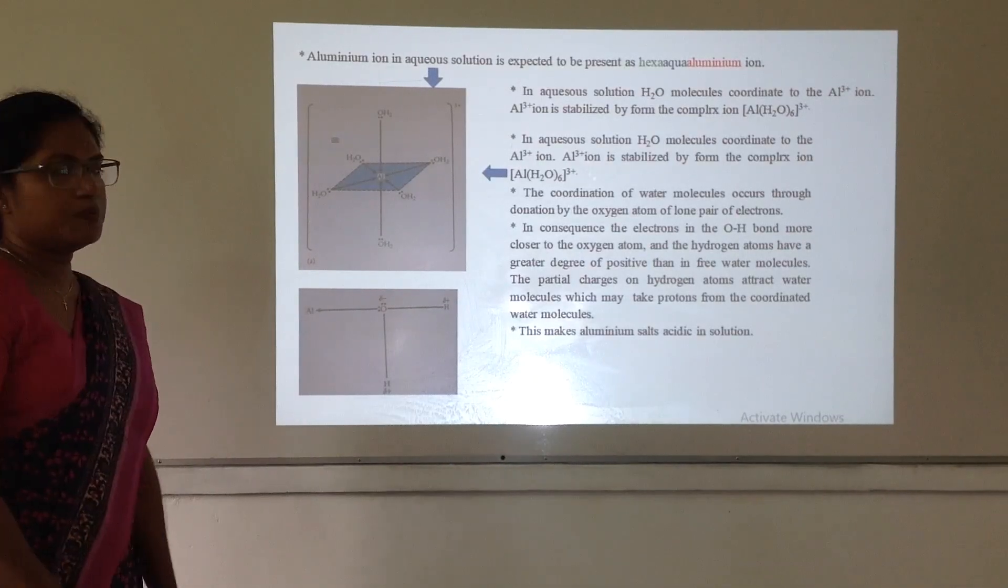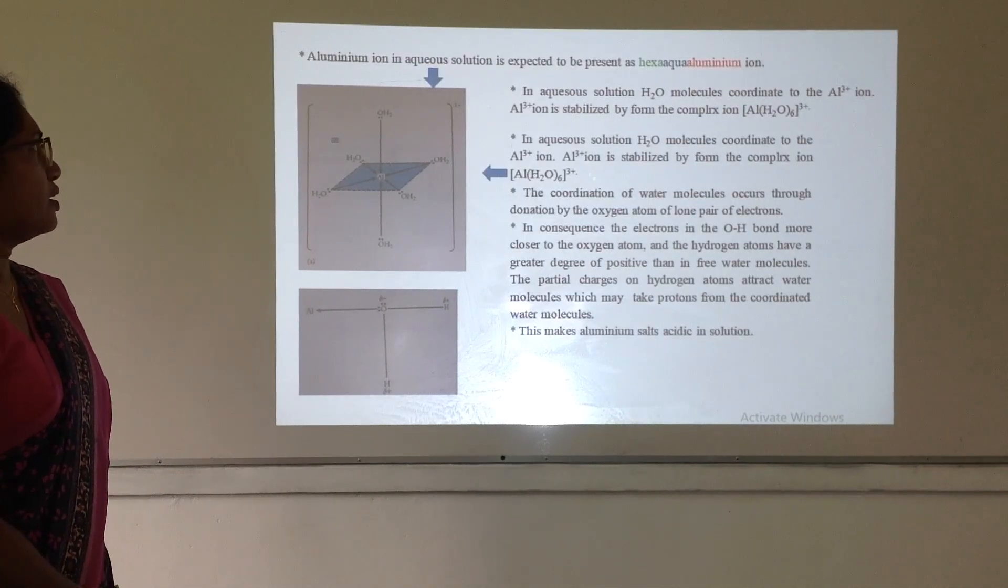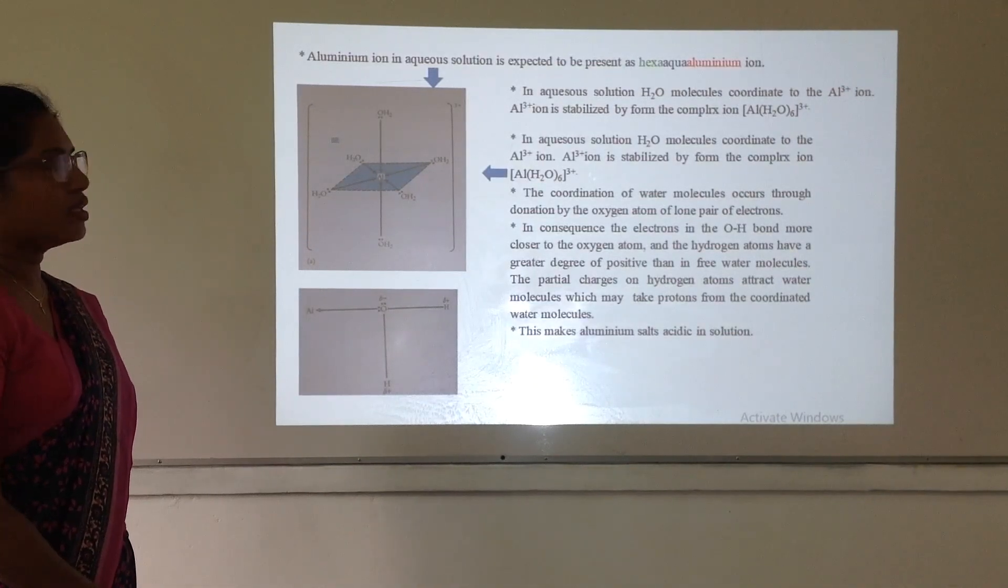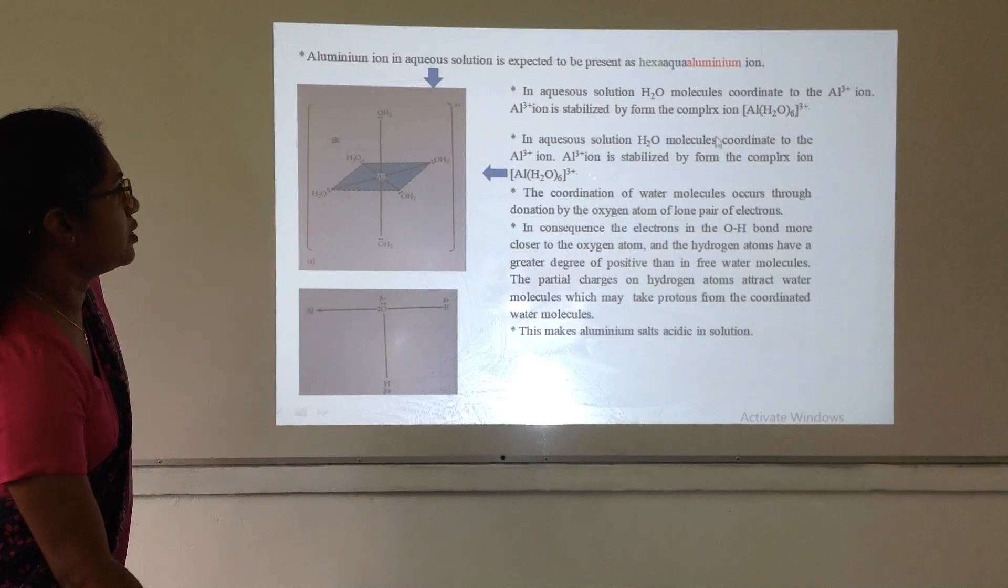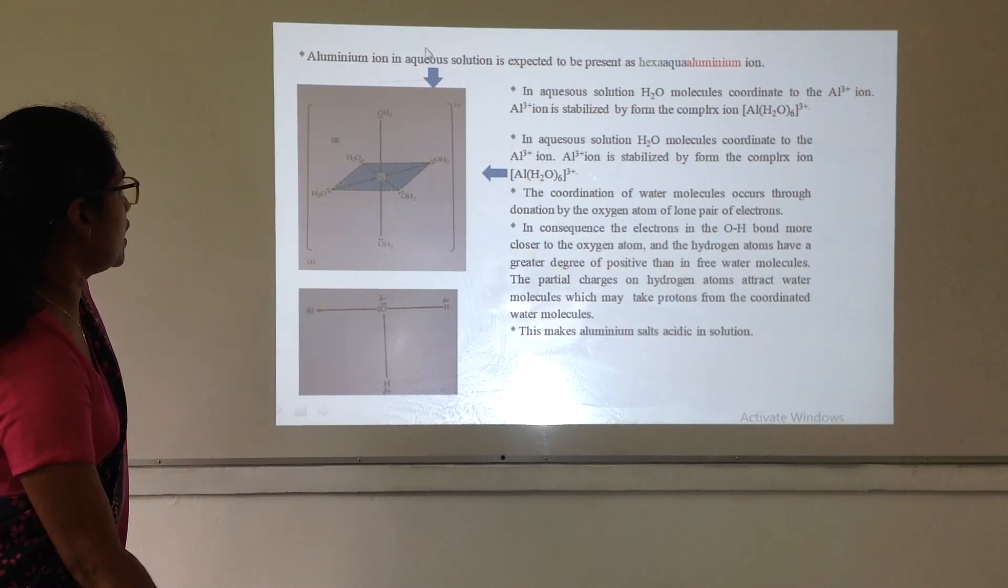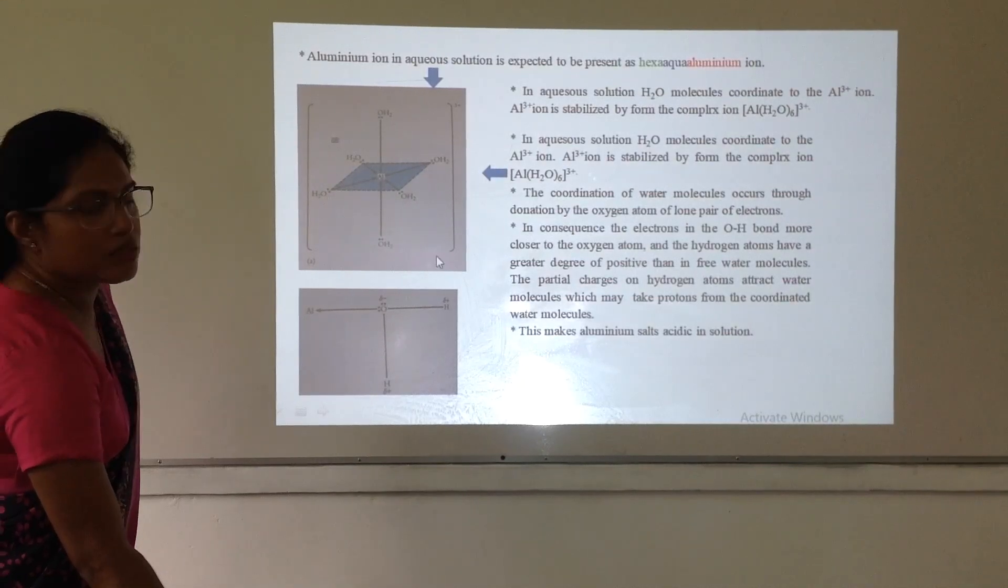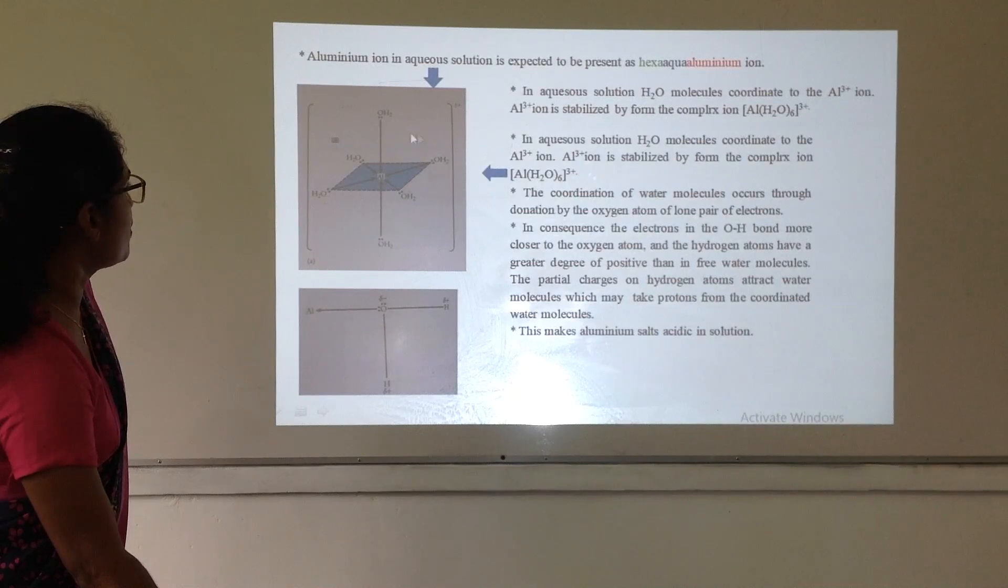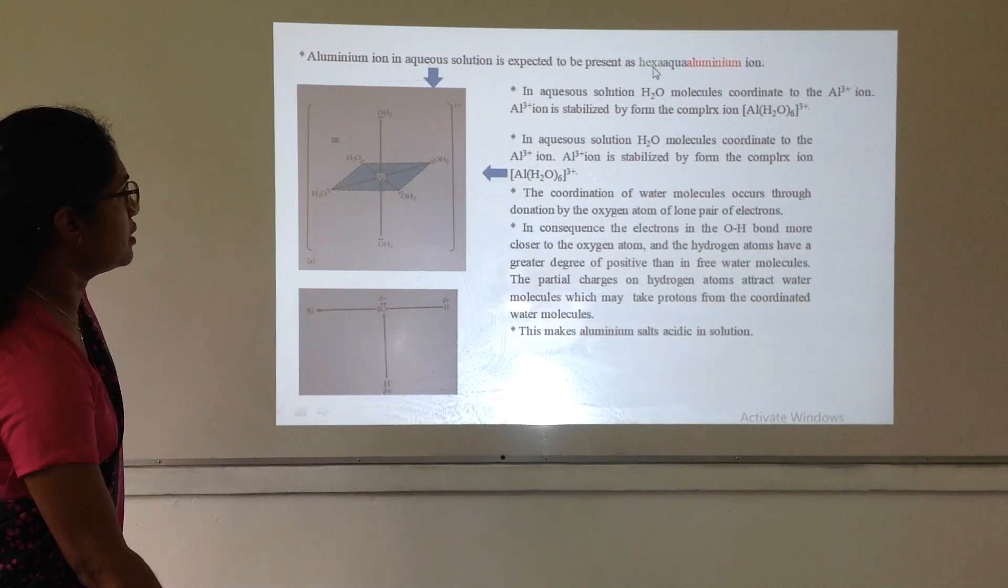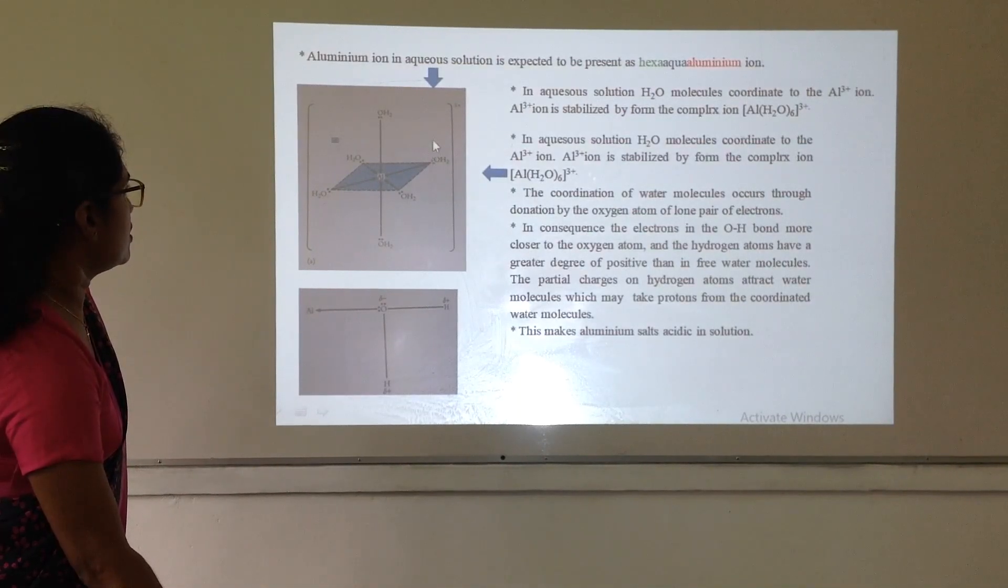Aluminium ions. There is a special incident in aluminium aqueous ions. Because aluminium ions in aqueous solutions are expected to be present as hexa-aqua-aluminium ions. As I show you in this picture, in aqueous solutions, aluminium ions always make coordination bonds with 6 water molecules and form this complex ion. This is the formula of that ion. Hexa-aqua-aluminium ion. That means it consists 6 water molecules.